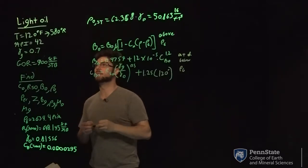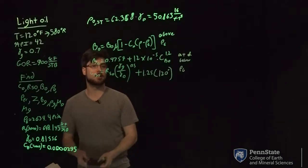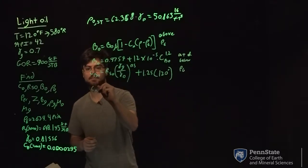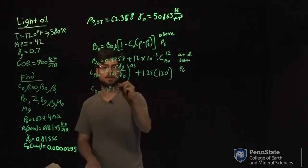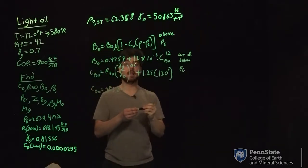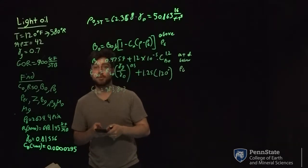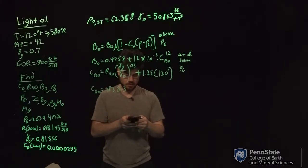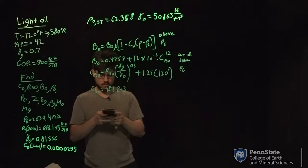Our gamma G is 0.7, our gamma O is 0.81, and our temperature is 120, so we can calculate CBO. Our CBO equals 983.803. Now plugging that into the equation, we have 0.9759 plus 12 times 10 to the negative fifth times CBO — 983.803 — to the 1.2 power.